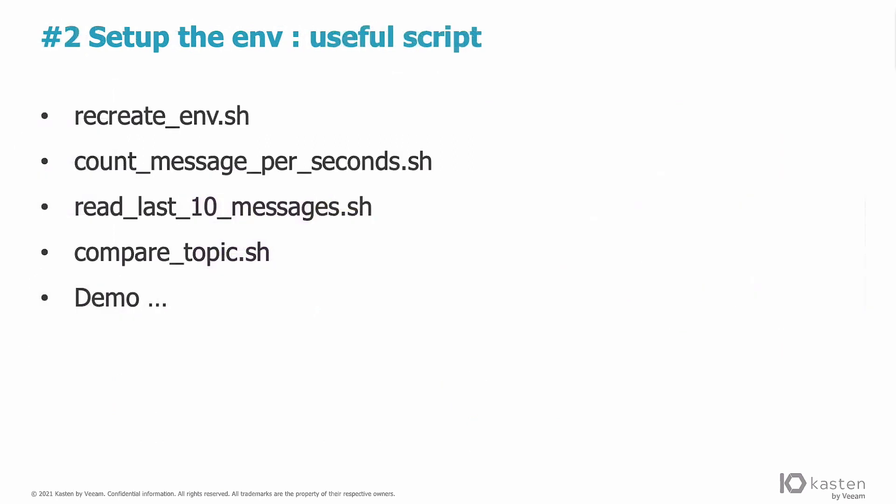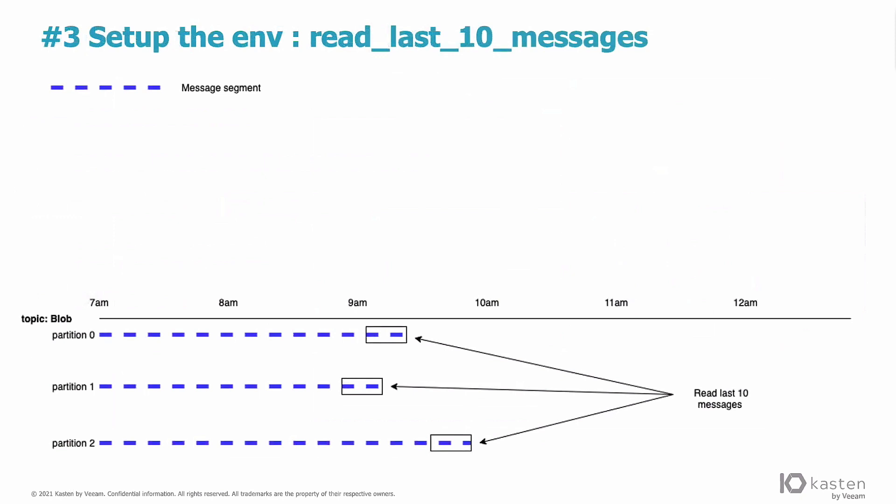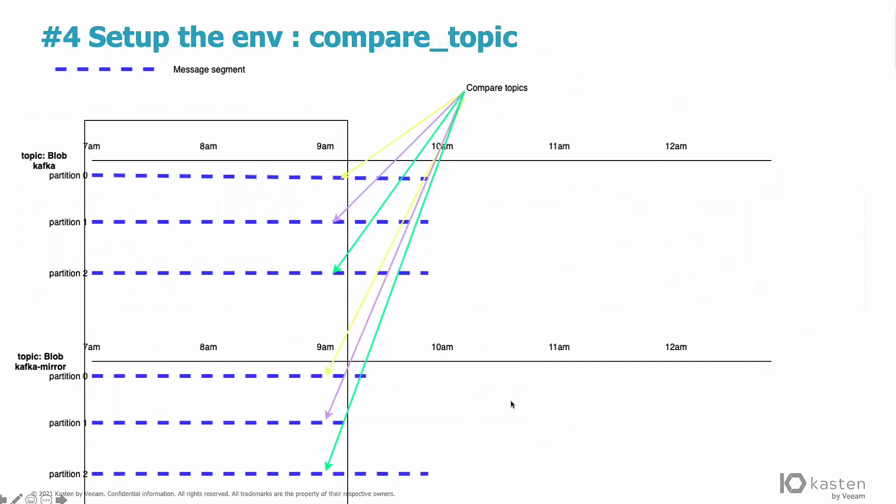So we're going to use different scripts that I'm going to demonstrate. We create the environment which is going to create everything. Count message per second which is going to show us that we are producing messages. Reading the last message which is going to help us understand what's going on at the end of the topic and something to compare the topics. So just to show these tools, read last message is going to read the last message of the topic and compare topic is going to compare the topic between the two clusters.